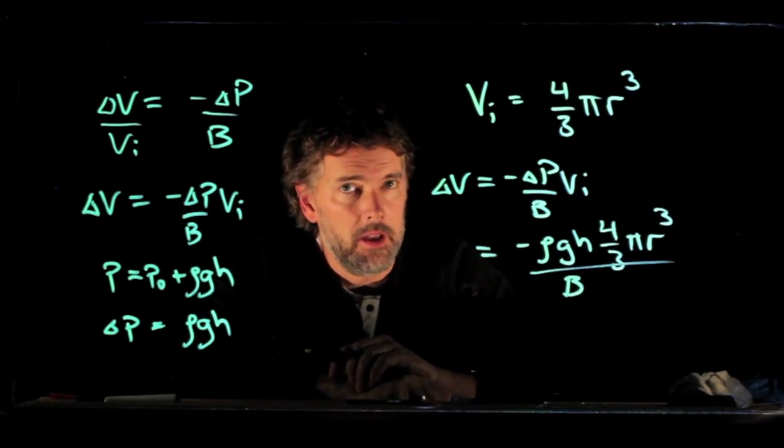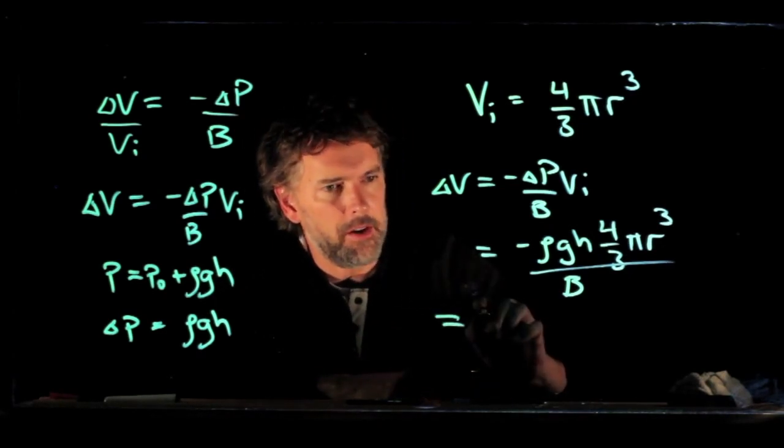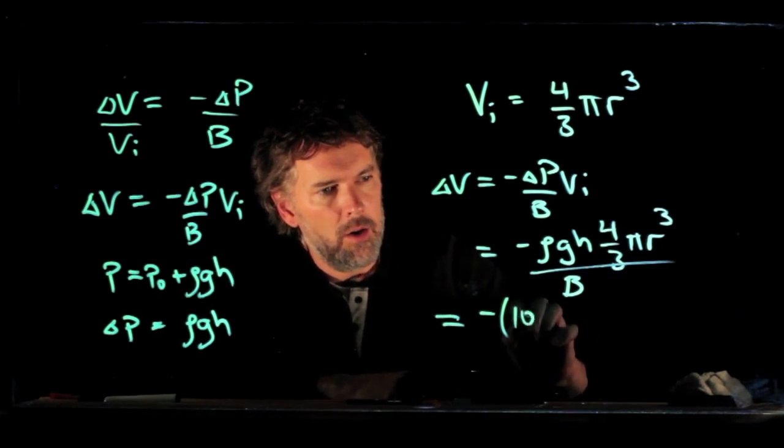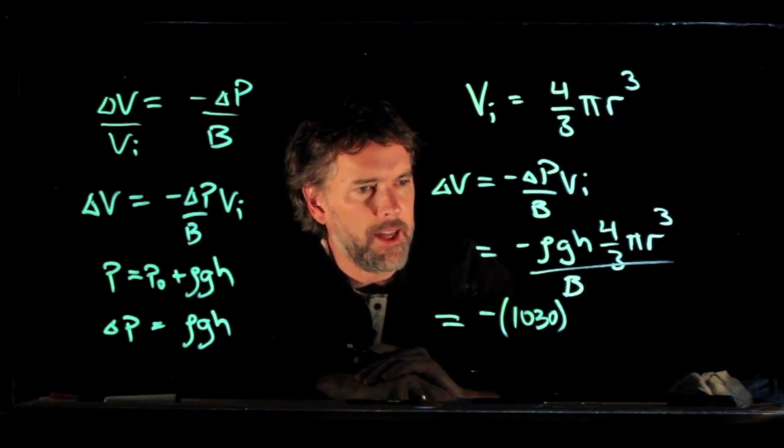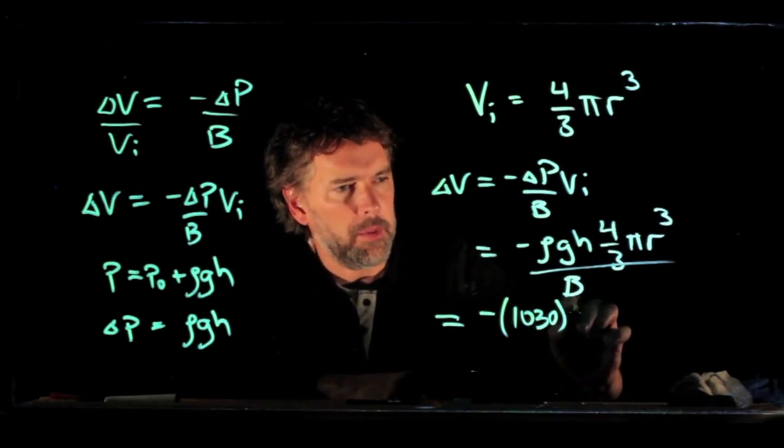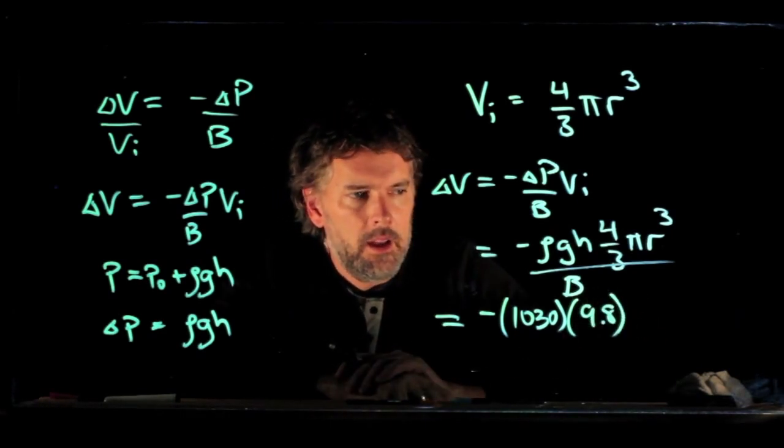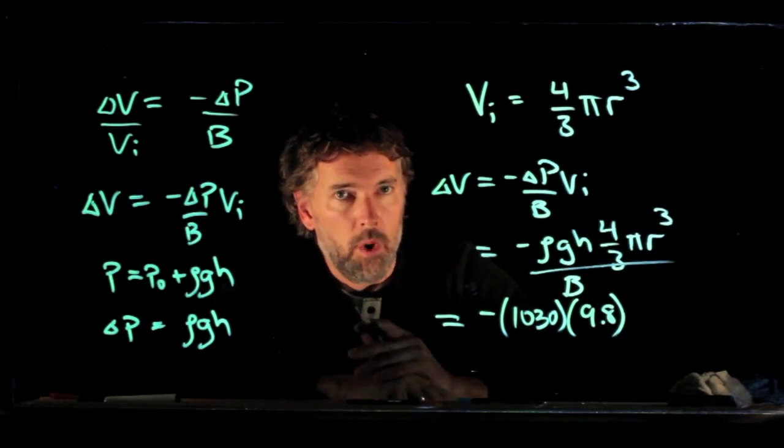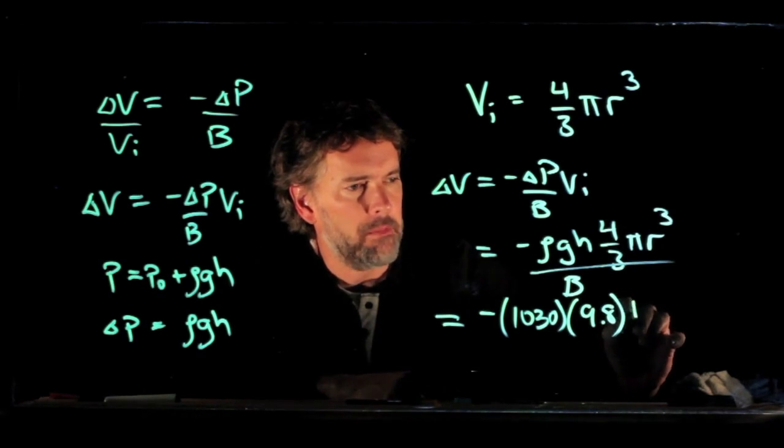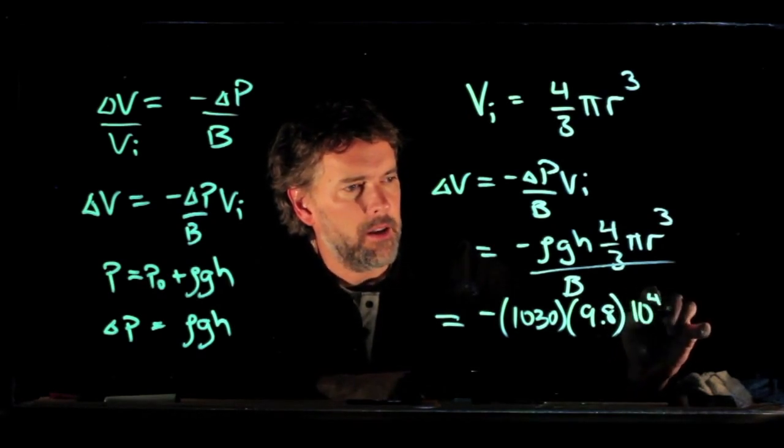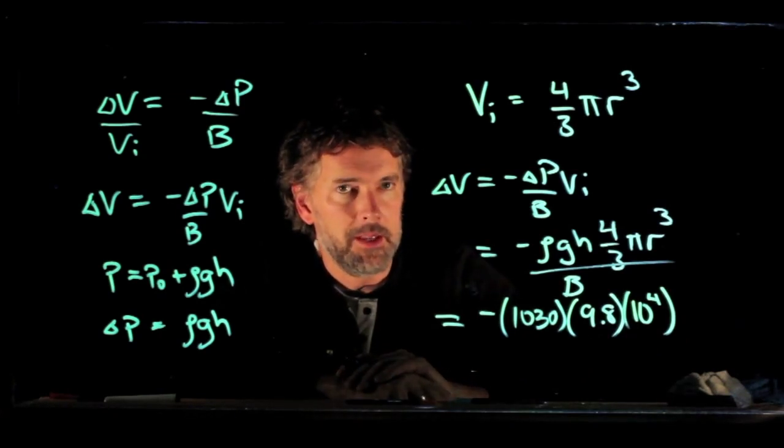All right, let's plug in all those numbers and see what we get. And to be clear, let's write out the numbers here. So we have ρ of seawater is a little bit bigger than pure water, so it's 1030 kilograms per cubic meter. g is of course 9.8. h is what? Well let's say that it is 10,000 meters down, so that's 10 to the 4 meters. Okay, this is close to the deepest point in the ocean.